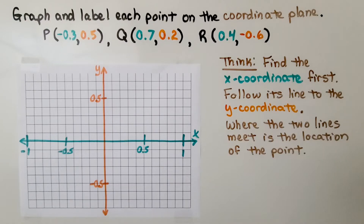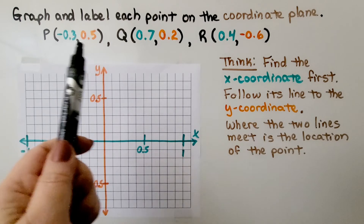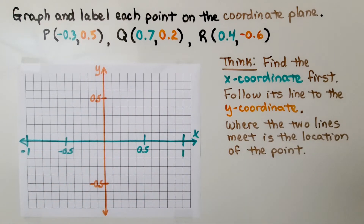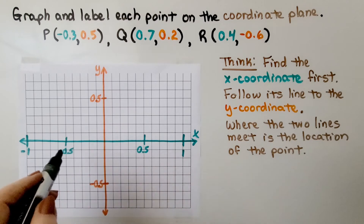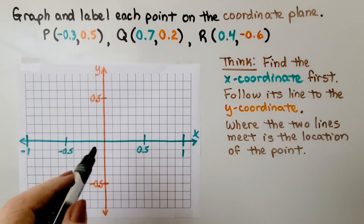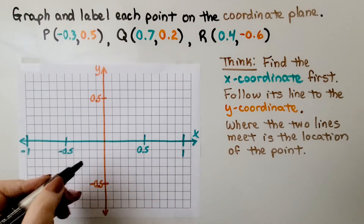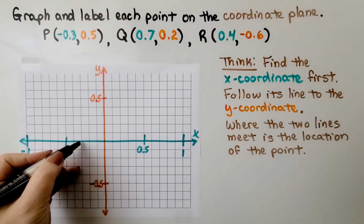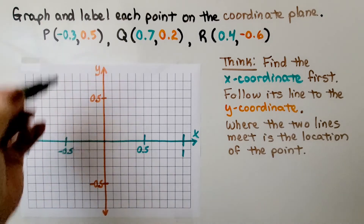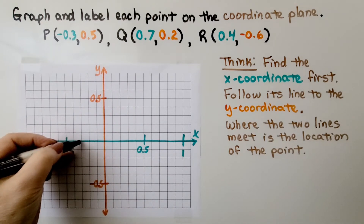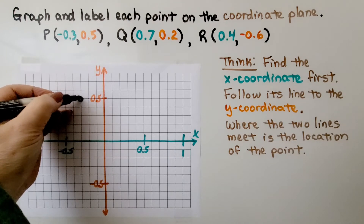We need to graph and label each point on the coordinate plane. For Point P at negative three-tenths for x, we can see that five units equals one-half, so each unit is one-tenth. Going left from the origin: one-tenth, two-tenths — that's negative three-tenths. The y-coordinate is positive five-tenths, so we go up: one-tenth, two-tenths, three-tenths, four-tenths, five-tenths. That's Point P.